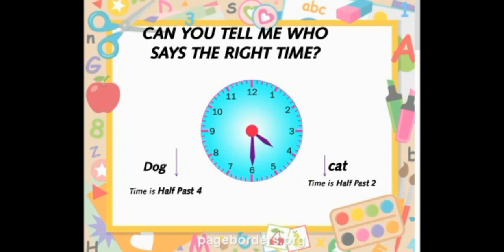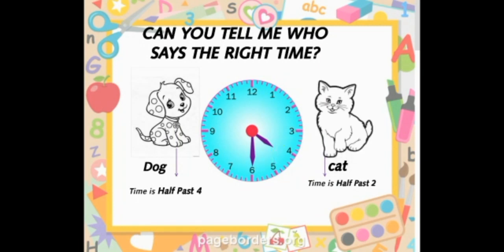Can you tell me who says the right time? Yes. Here we have a dog and a cat. The dog is saying that the time is half past 4, and the cat is saying half past 2. Now tell me who is telling the perfect and the right time? Yes. The dog is right. It is telling the correct time. It is half past 4.